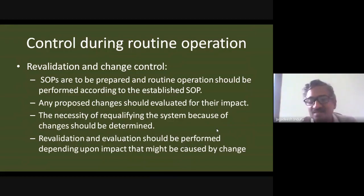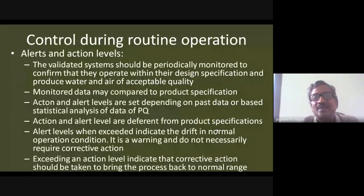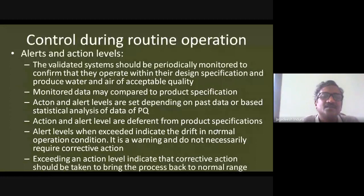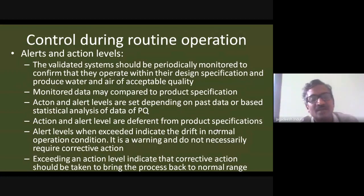Action and alert limits are set based on past data from statistical analysis in retrospective validation. The upper alert limit triggers a warning when approached; exceeding the action limit requires stopping the process and restoring normal operation. Action and alert limits are different from — and more stringent than — pharmacopeial product specifications. Alert levels indicate drift in normal operation, while exceeding the action level means you must stop, take corrective action, and only then proceed. This completes the entire journey of equipment qualification and process validation.